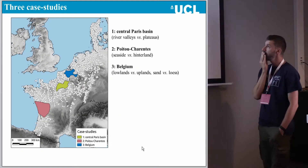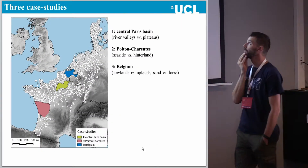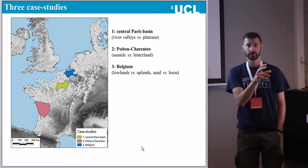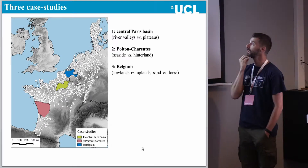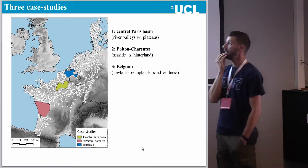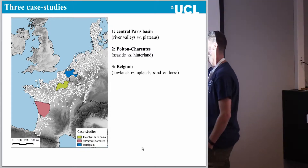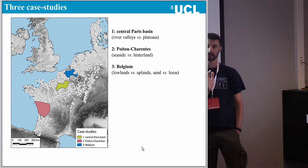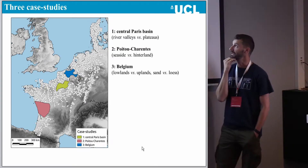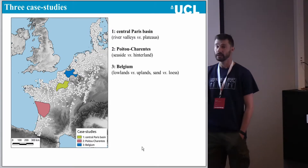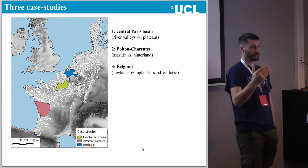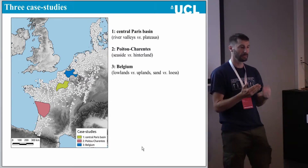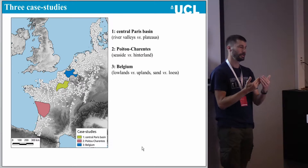I've taken three case studies: the central Paris Basin, where I look at the difference between a river valley and a corresponding plateau; a western area where the difference is more between a coastal area and a corresponding hinterland; and Belgium, where we have true lowlands but also a contrast between sandy and loess areas.